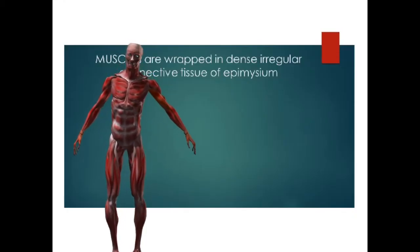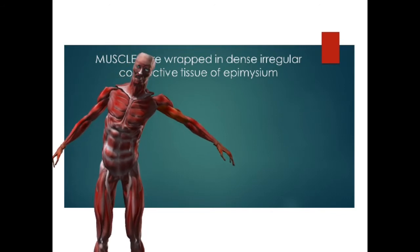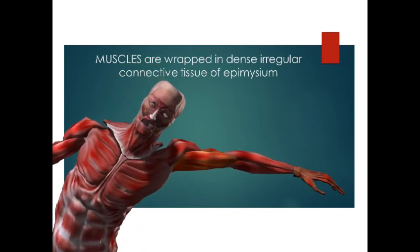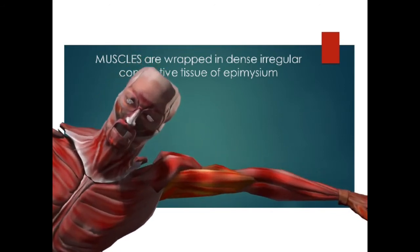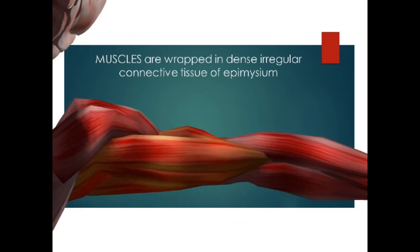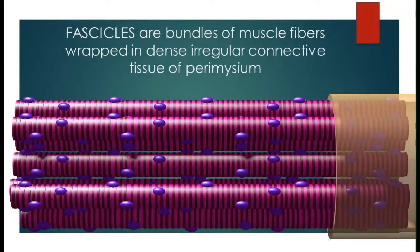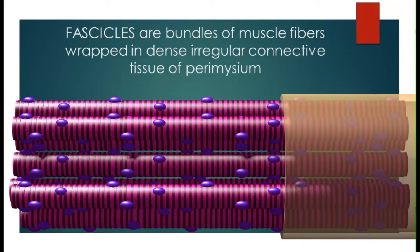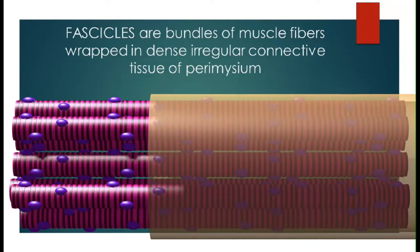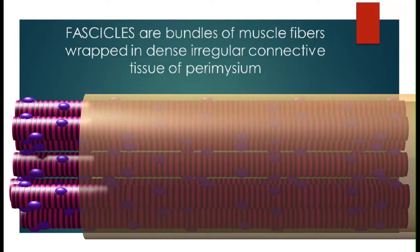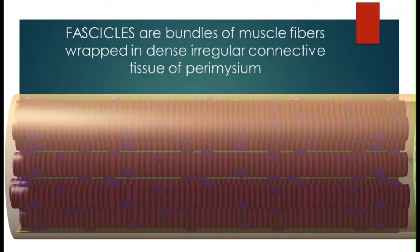An entire muscle is wrapped in a layer of dense irregular connective tissue known as the epimysium. Groups of muscle fibers form fascicles, and fascicles are wrapped by dense irregular connective tissue known as the perimysium.